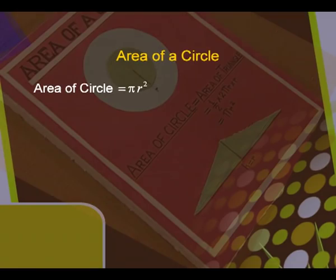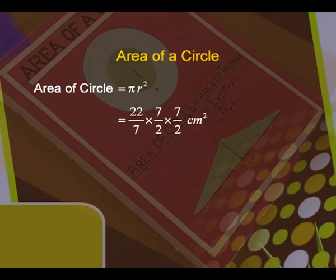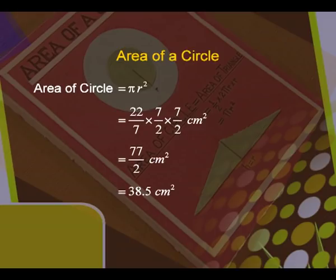Now let us see what is the area of the circle. The formula is πr². The value of π we are taking as 22/7 and radius was 7/2. On calculation, 7 gets cancelled and 11 times 2 is 22, so we have 77/2 here also, and thus the area of the circle is 38.5 centimeter square.